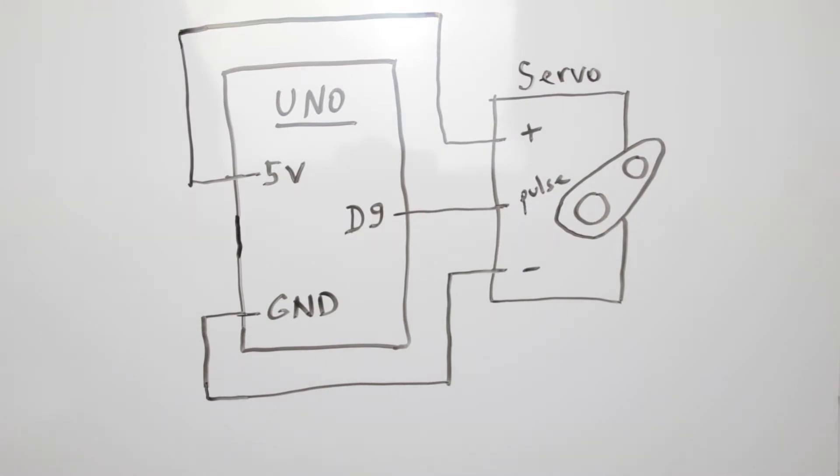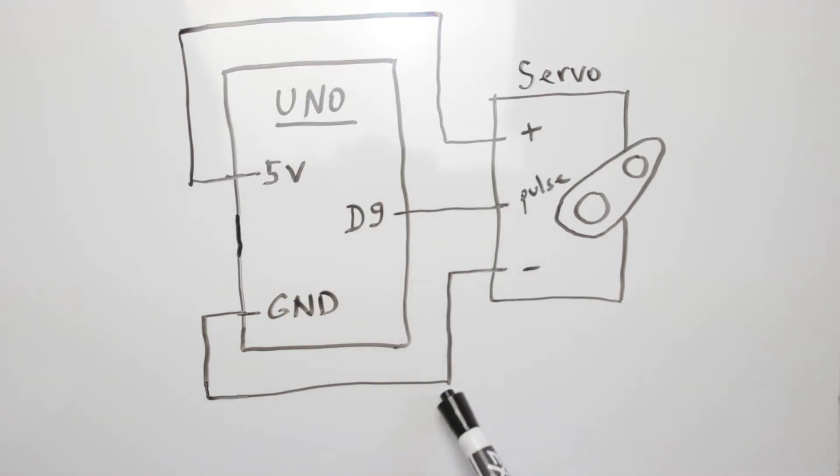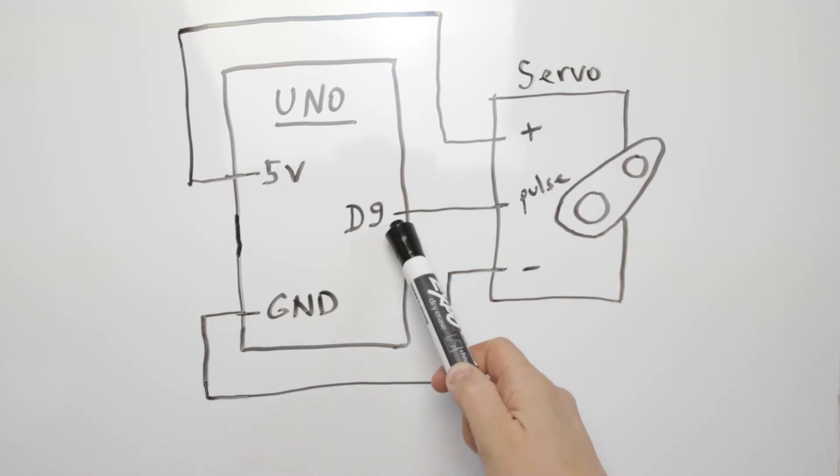This is a schematic for the first example to do with the servo sweep. 5 volt is connected to the positive wire of the servo. Ground wire of the servo is connected to the ground. Pin D9 is connected to the signal wire of the servo.